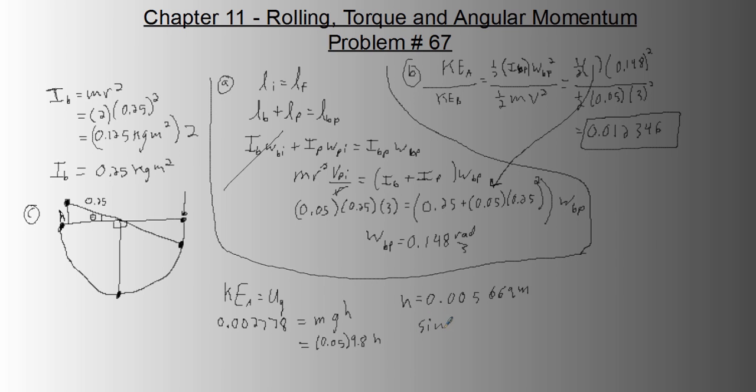So, now, sine theta equals H over, let's just call this R, this 0.25 radius thing is R. So, that gives us a theta of, I'm just going to skip some steps here, 1.299 degrees. So, the total angle it moves through is 180, because it goes down and up, plus that. So, theta total is 181.3 degrees.